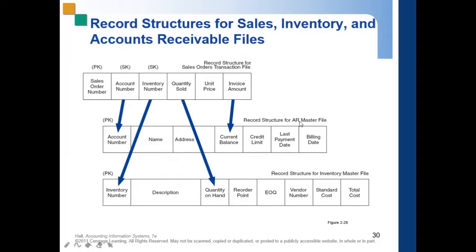However, the account number becomes a primary key when you are already recording in the AR master file, since each customer has a different account number. That is the primary key — the account number — and it is unique or special for that certain file.